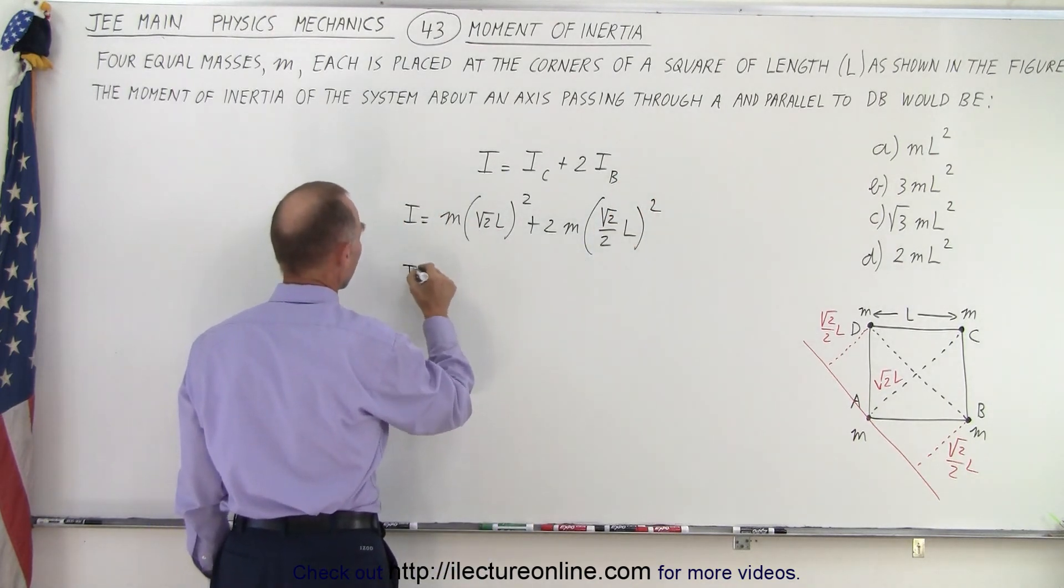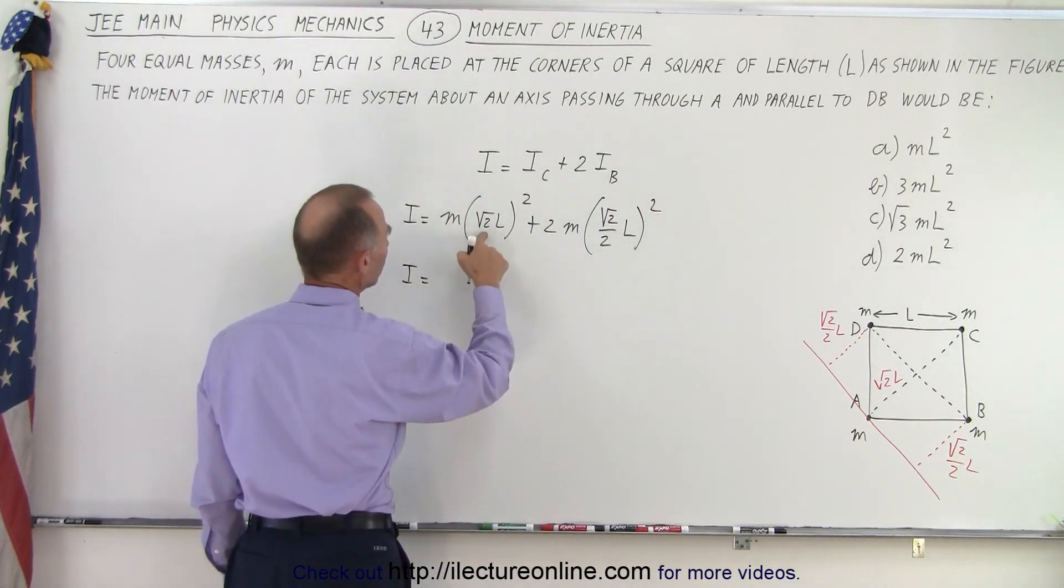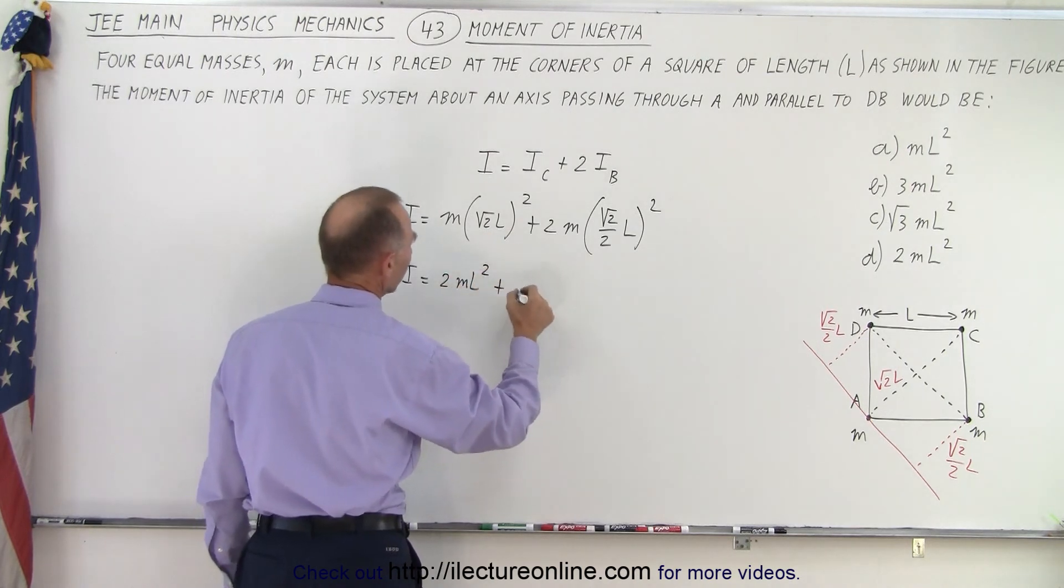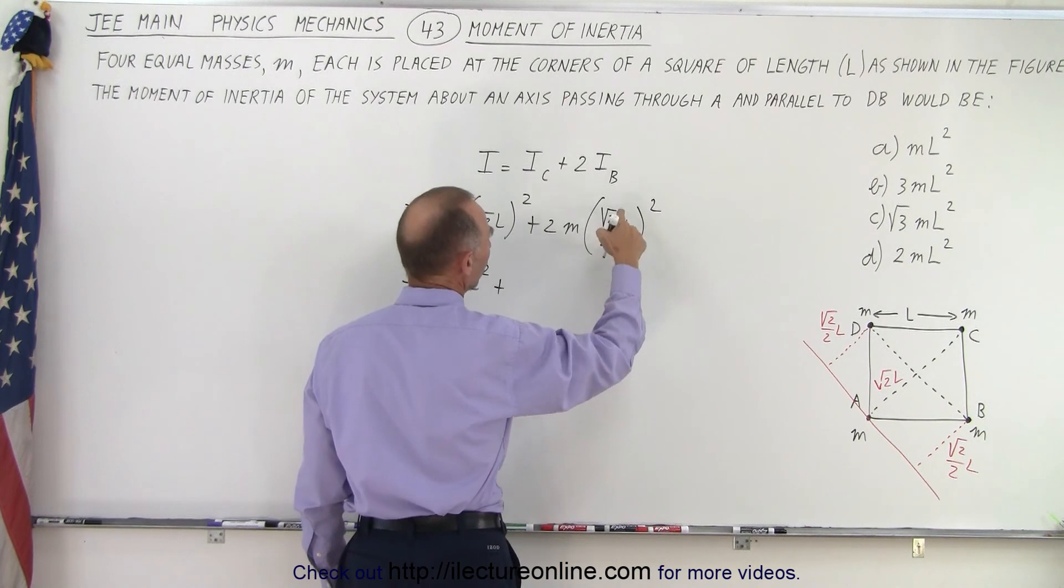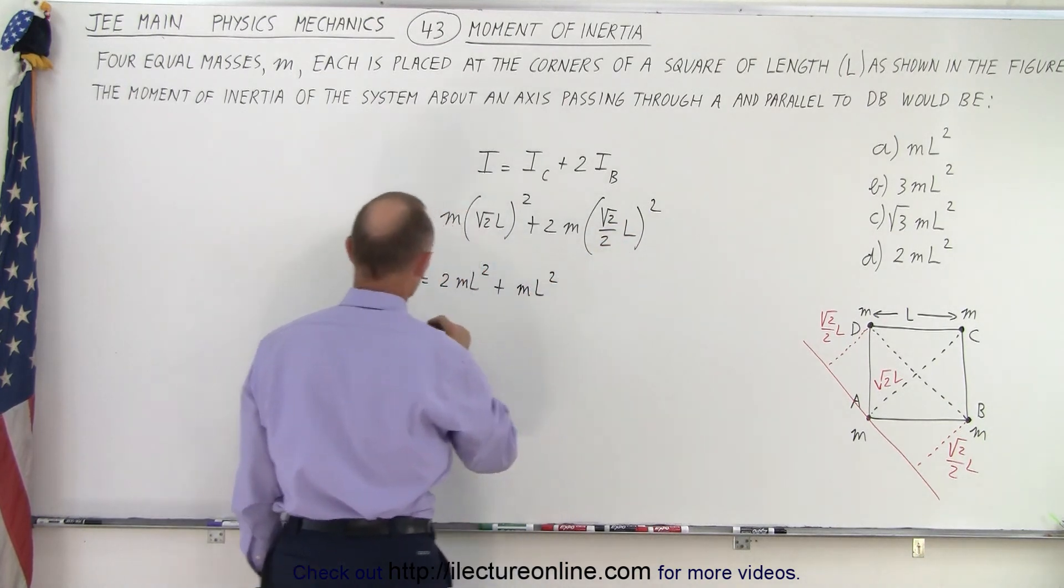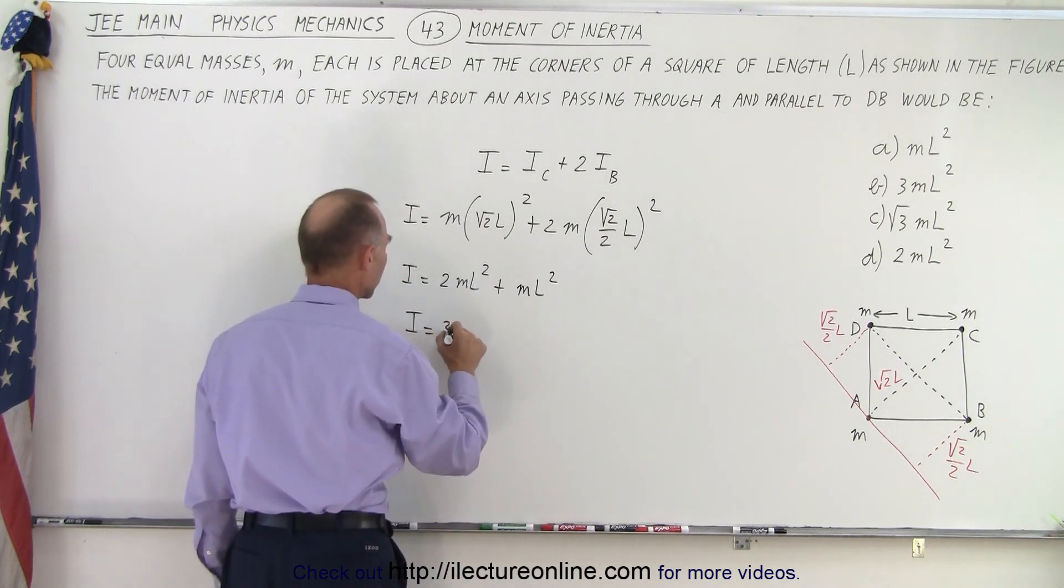So that would be I equals—that would be 2L squared, that would be 2mL² plus, this would be 2 over 4, that's one half times 2, which is another 1mL². So the total moment of inertia would be 3mL².